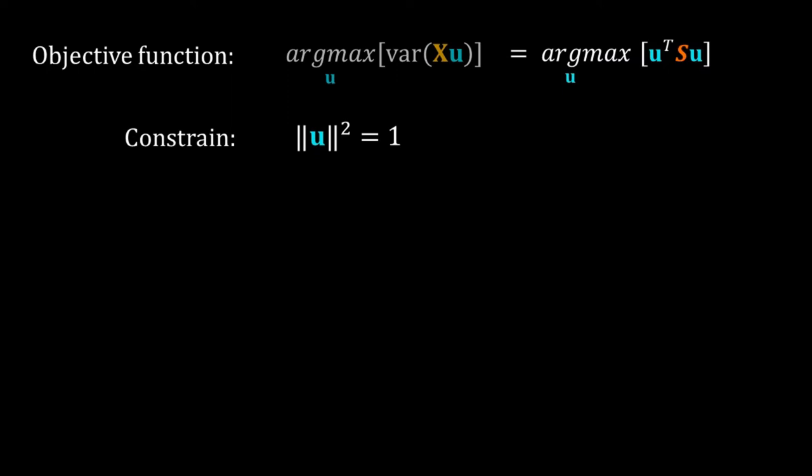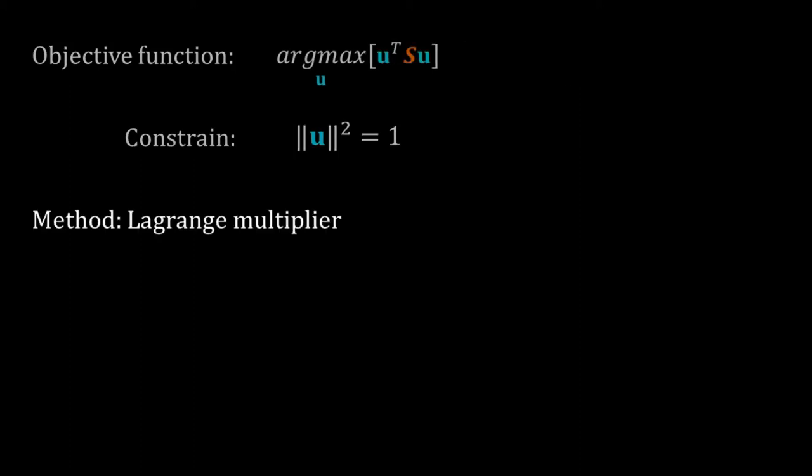Now I reframe our objective function using the explicitly calculated variance. It is now argmax u of u transpose S u. I will use the method of Lagrange multipliers for this problem. Lagrange multipliers are widely used in physics and engineering for constrained maximization and minimization — it is a very useful technique.